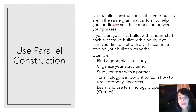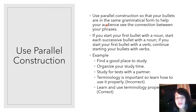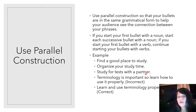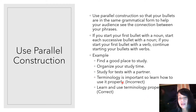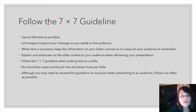Use parallel construction so that your bullets are in the same grammatical form, helping your audience see the connection between phrases. If you start your first bullet with a noun, start every other bullet with a noun; if you start with a verb, start every other bullet with a verb. For example, in a list like 'Find a good place to study,' 'Organize your study time,' 'Study for tests with a partner' — a bullet like 'Terminology is important' breaks the pattern; the correct form would be 'Learn and use terminology properly.'